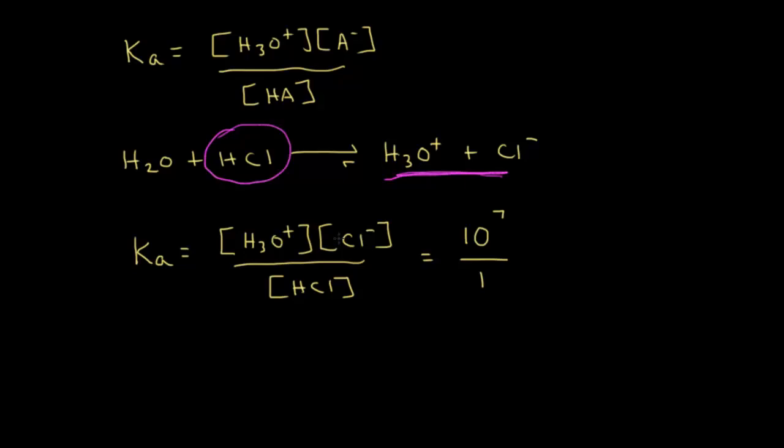Because HCl is so strong, we're going to get a very high concentration of products to reactants, and that's what the Ka expression does — it gives you a relative idea about the strength of the acid. HCl is very strong, so we get a Ka value of 10 to the 7th. Usually when you're doing Ka values, you get extremely large or extremely small numbers, which can be annoying when you're doing math or talking about the acidity of a compound. So chemists take what's called the pKa value instead of the Ka value.